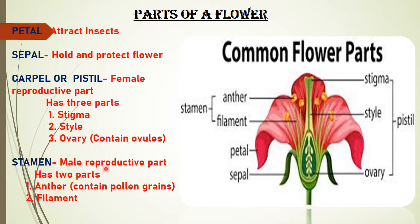The stamen is the male reproductive part of a flower. It has two parts: the anther and the filament. The filament is a stick-like structure that holds up the anthers, and the anthers have a yellow powder called pollen grains.